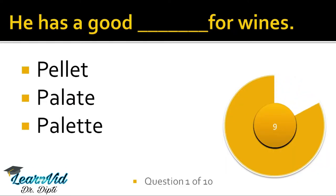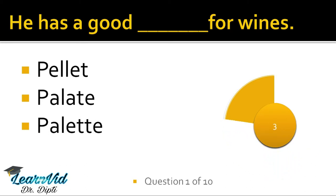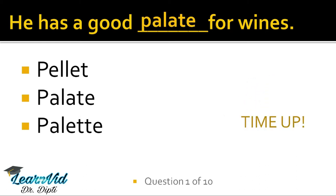The first one is: he has a dash for wines. Which palette will come in this? The correct option is P-A-L-A-T-E. Now let us see the meaning of each option. P-E-L-L-E-T means a tablet — a medicine pill which we take, we call it pellet. Next is P-A-L-A-T-E. This palette is the taste buds, which is the correct option here.